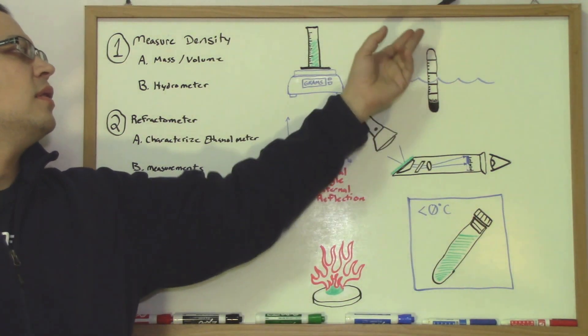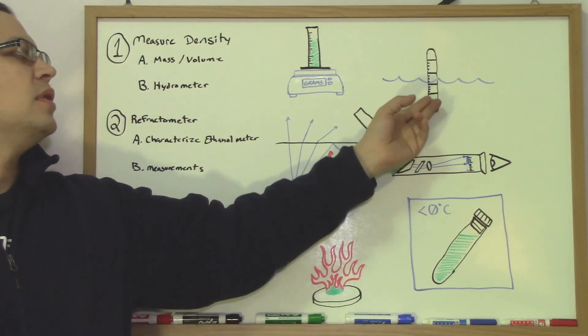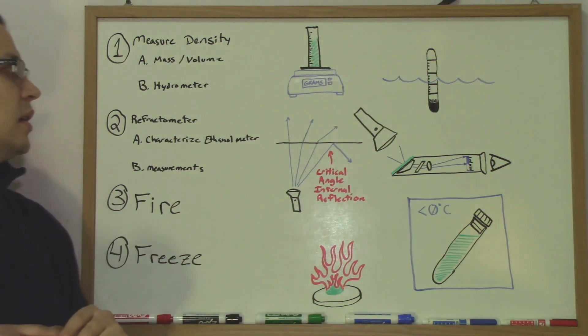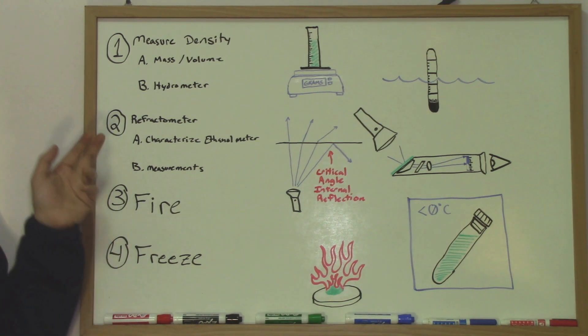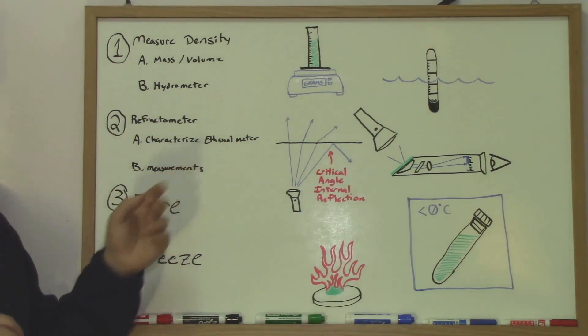The heavier the liquid, the less buoyant this will be and the higher it will be up. Moving on to the next type of method is using a refractometer.